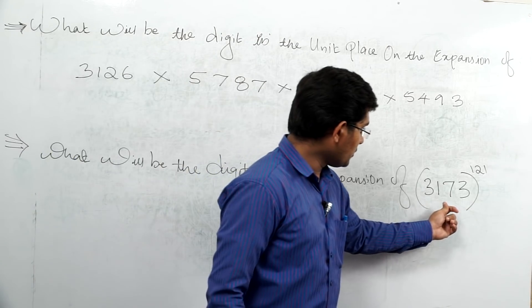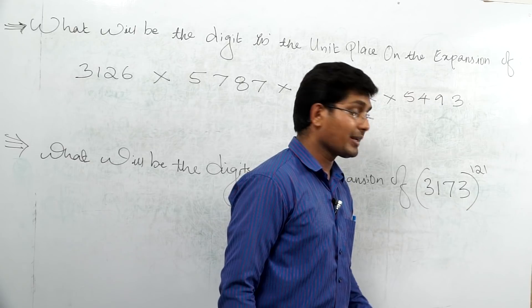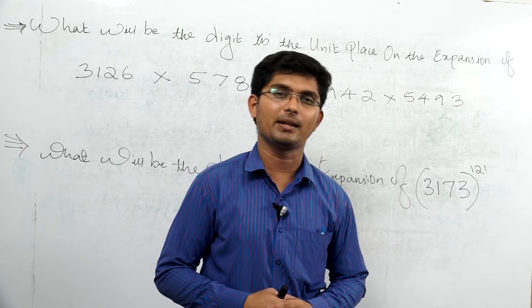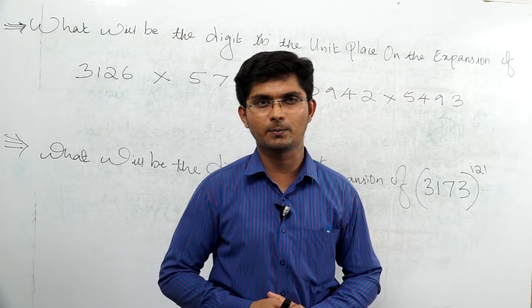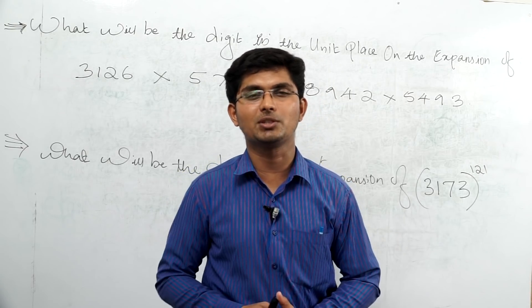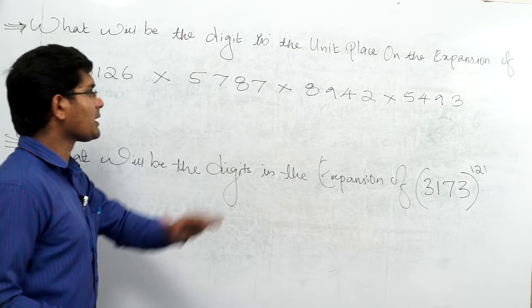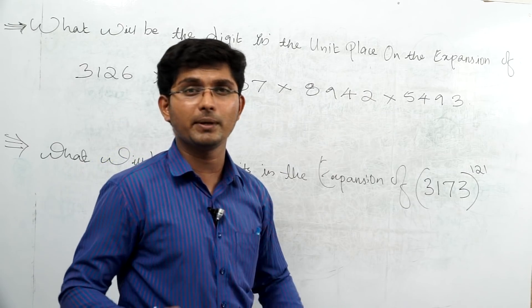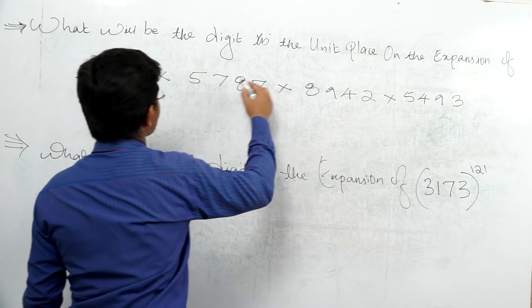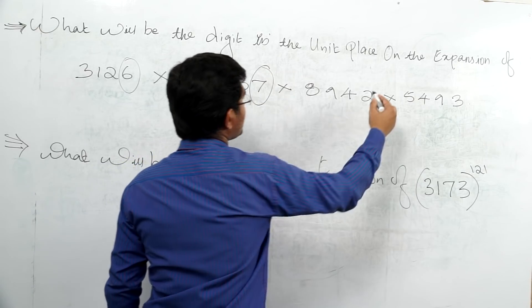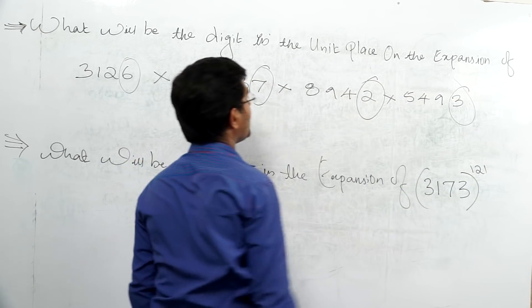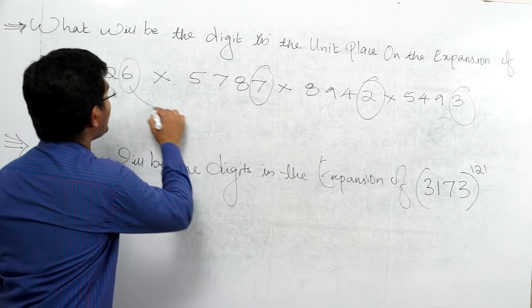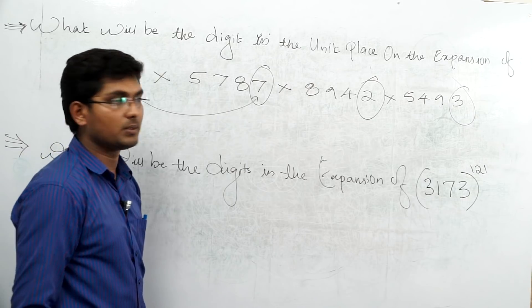To find the unit digit of this product, we only need to look at the unit digits of each number. The last digit of 3126 is 6, the last digit of 5787 is 7, the last digit of 8942 is 2, and the last digit of 5493 is 3.